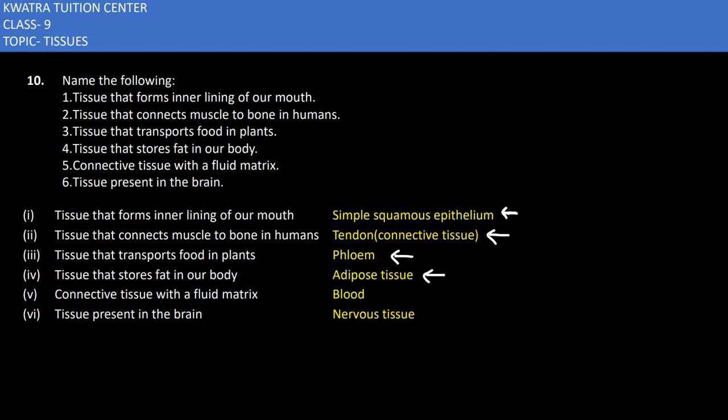Connective tissue with a fluid matrix - connective tissue where there is no gap, intercellular spaces are not present, and it is blood.